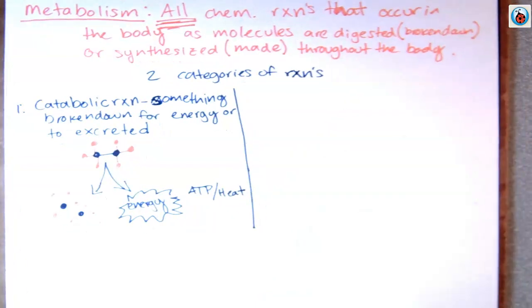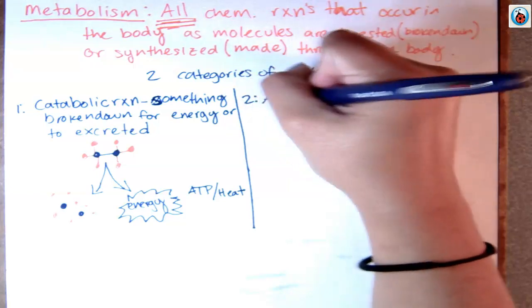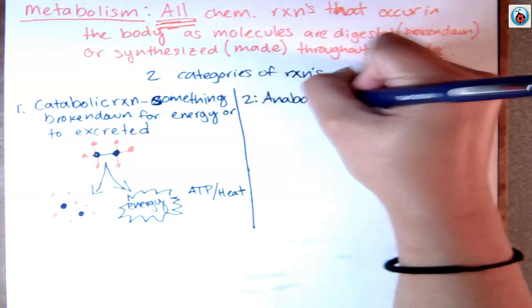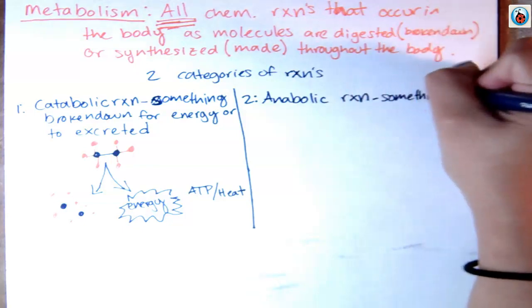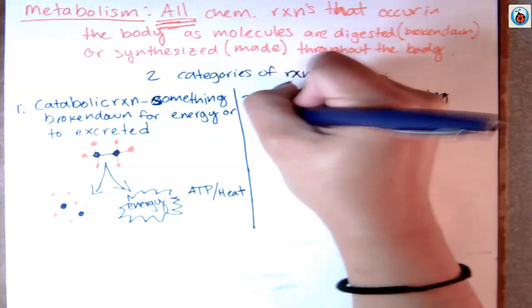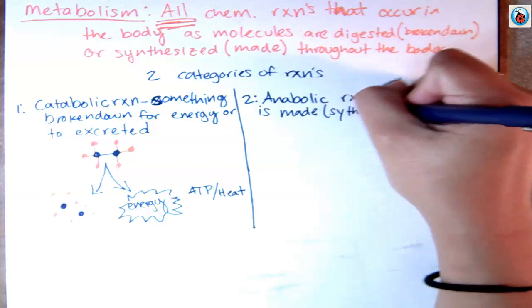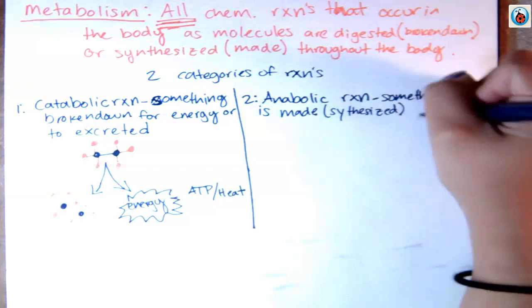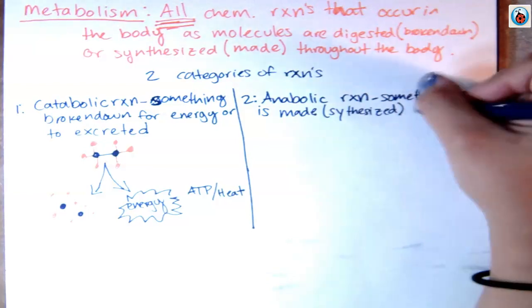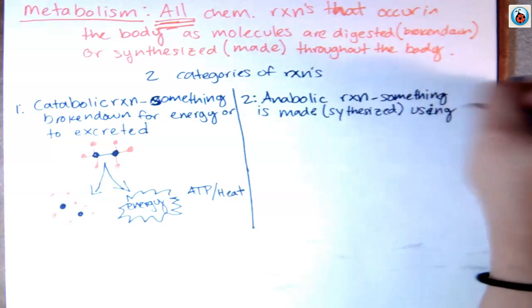Category number two is pretty much the opposite, and that is known as an anabolic reaction. This is when something is going to be made — or synthesized. Whenever you're building stuff, you're going to actually use energy.